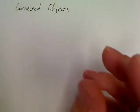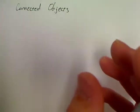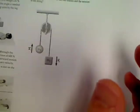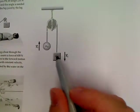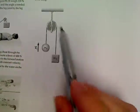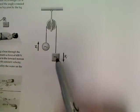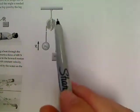The most simple type of connected object problem looks like the one in this picture. This is what's known as an Atwood's machine, a pretty common physics lab to do in your labs.